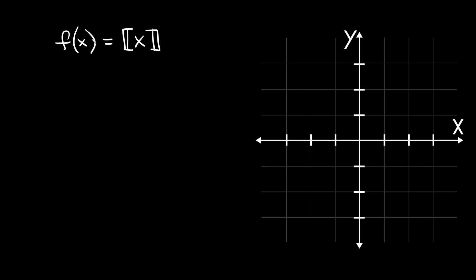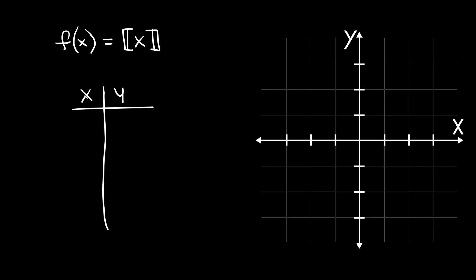We have f(x) equal to the greatest integer less than or equal to x — written with those special bracket symbols. I know that sounds like a mouthful but it's actually not too bad. The easiest way to graph step functions is to make an XY table, plug in some numbers for x, and see what comes out for f(x).